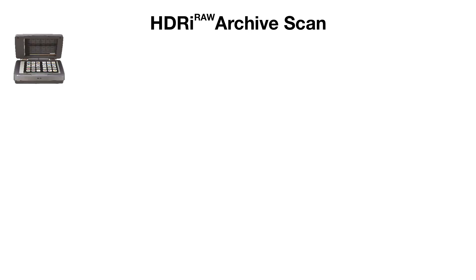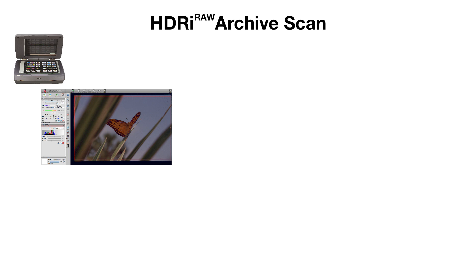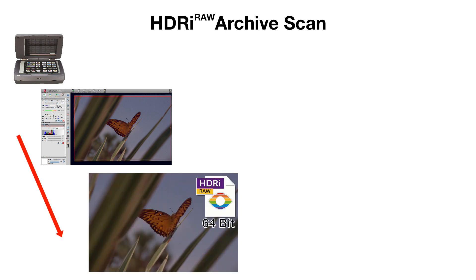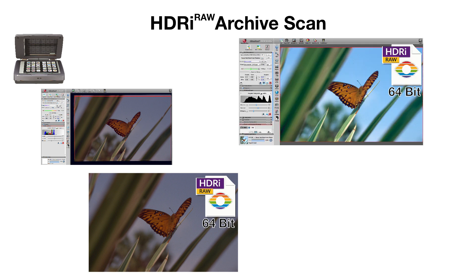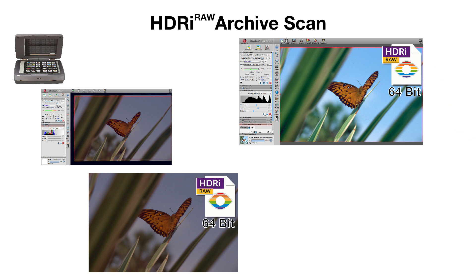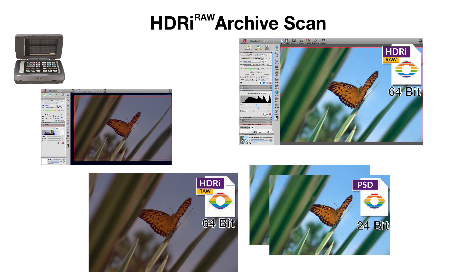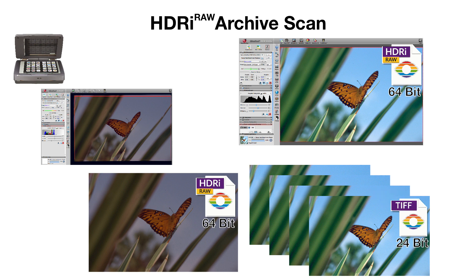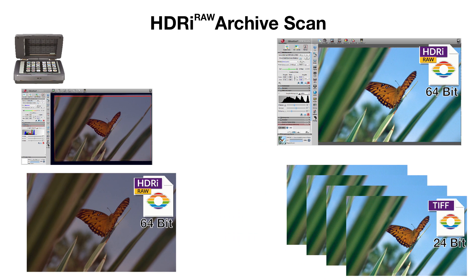Now, let's take a look at the scanning of HDRRAW files. In this process, the original is scanned without any optimizations and saved as a 64-bit file. This file acts as an intermediate step in the workflow — it is the foundation for optimizations on which the 24-bit files will be based. With this process, faulty image optimizations are no longer a problem. 24-bit files can be generated again at any time in a number of different file formats. At this point, another advantage of the unique RAW workflow comes to light: scanning and optimizing can take place spatially and temporally apart from each other.